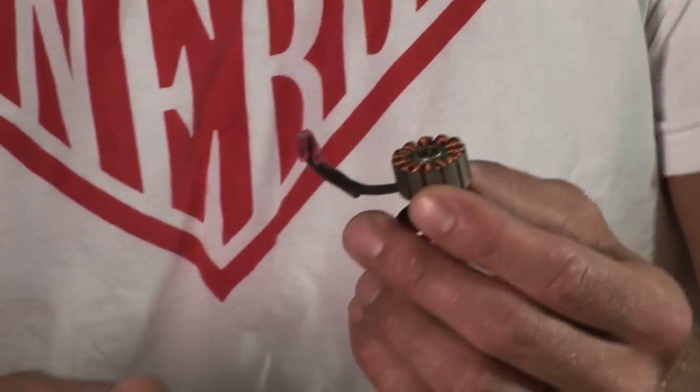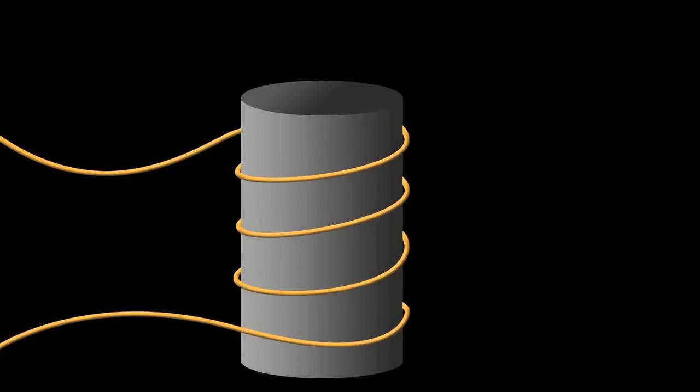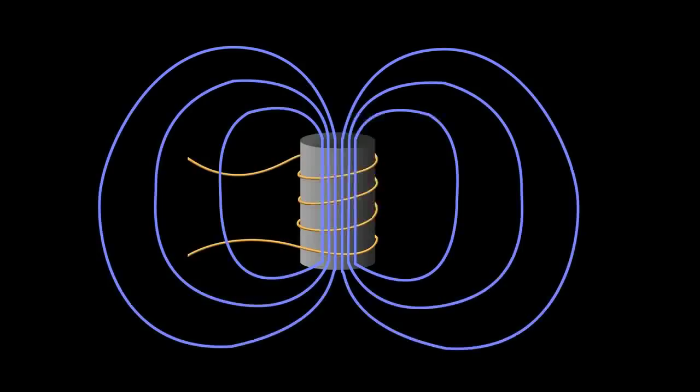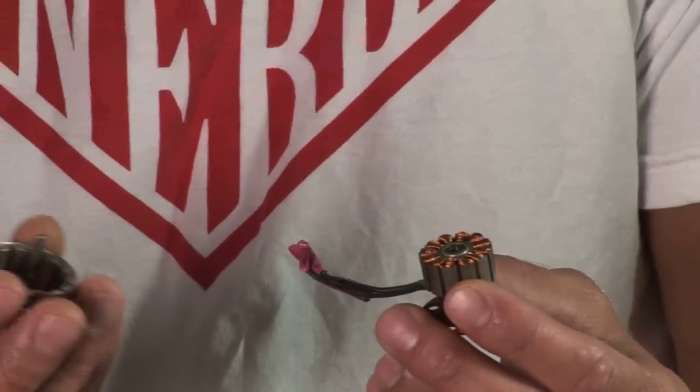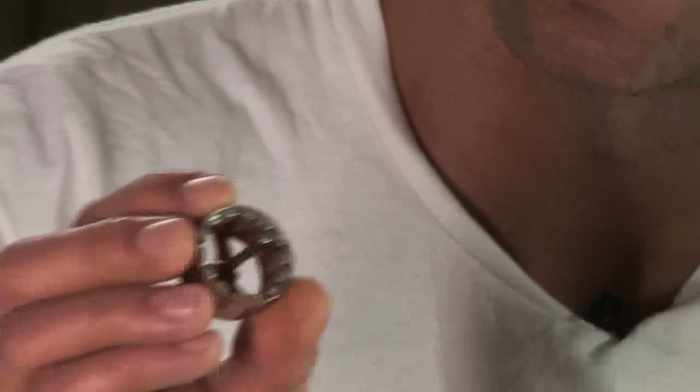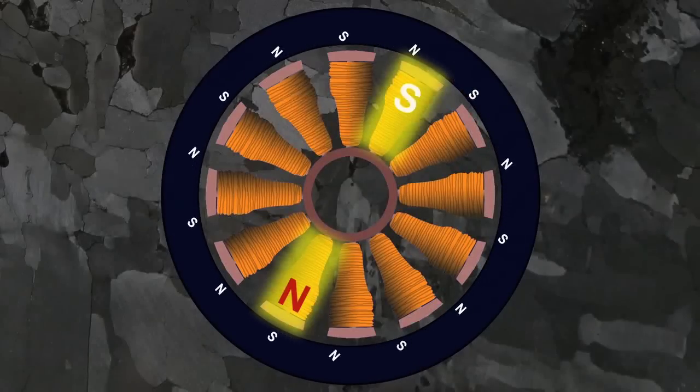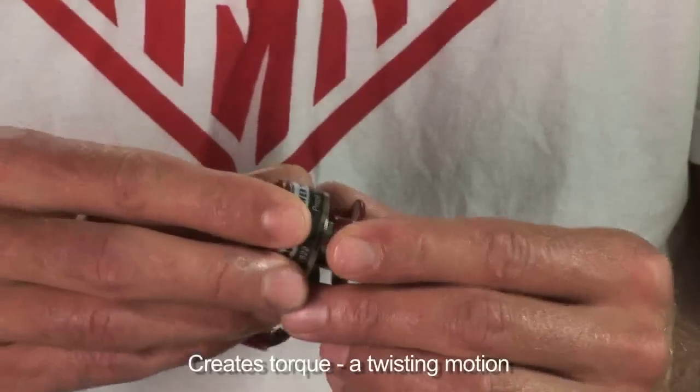So we take a copper wire and wrap it around a ferromagnet or iron in this case and put a current through it. And that current creates an electromagnet which produces a magnetic field which when placed in the presence of another magnetic field, which you can see permanent magnets on the housing here, creates a magnetic force. And that magnetic force is turned into a torque which then spins the motor.